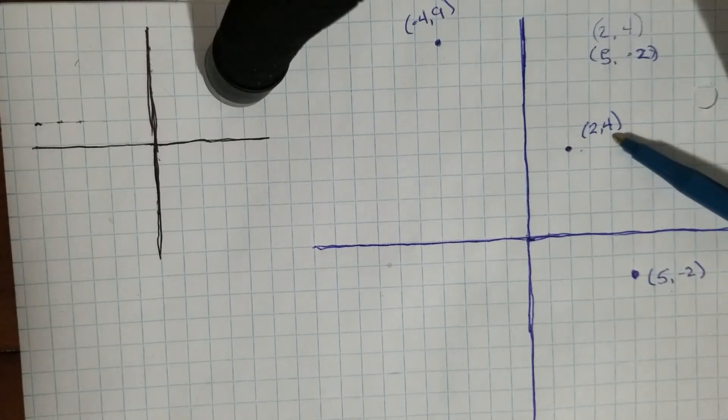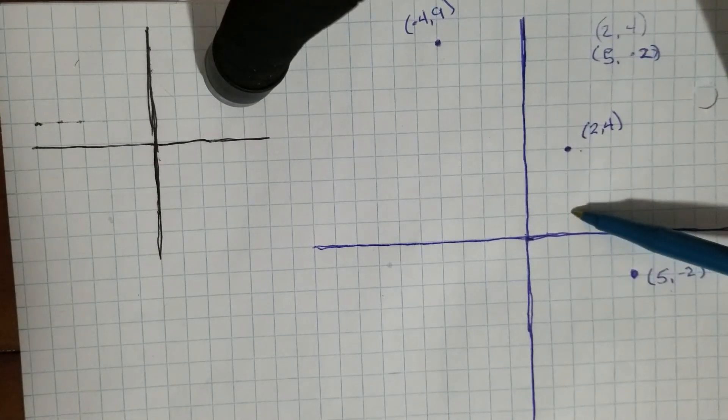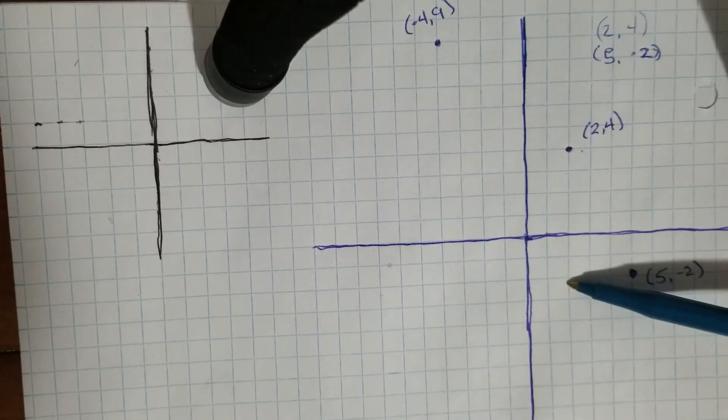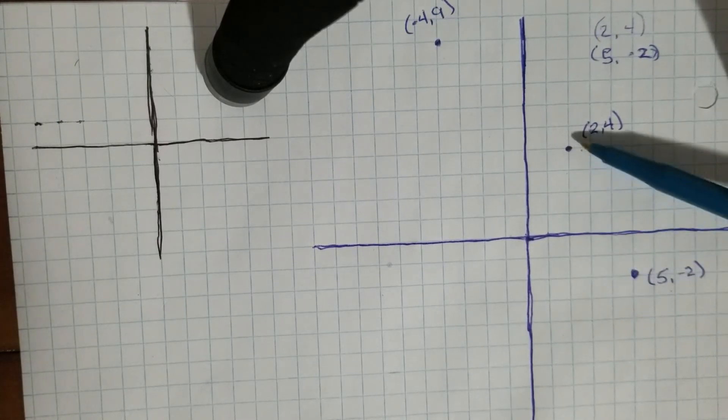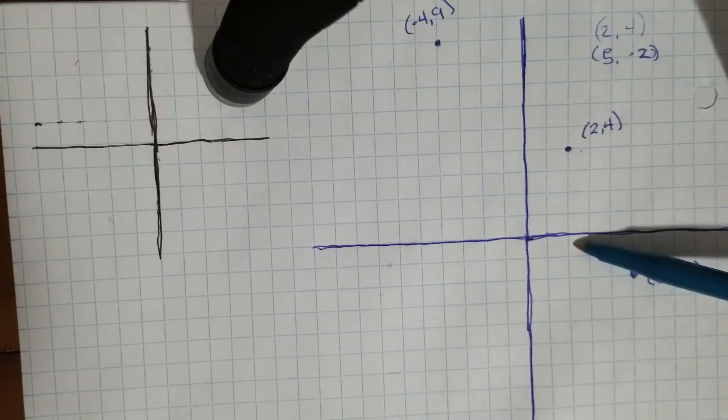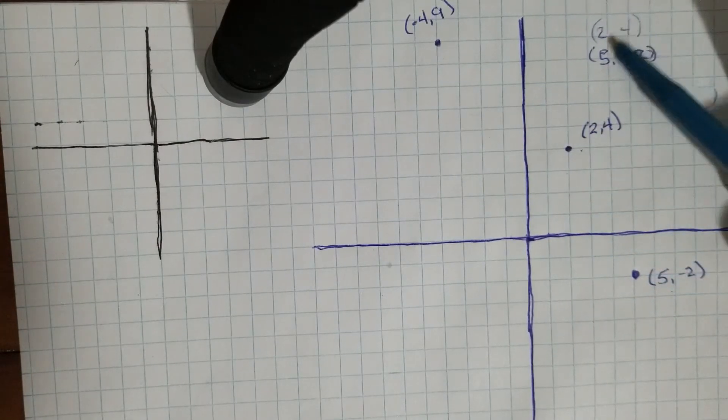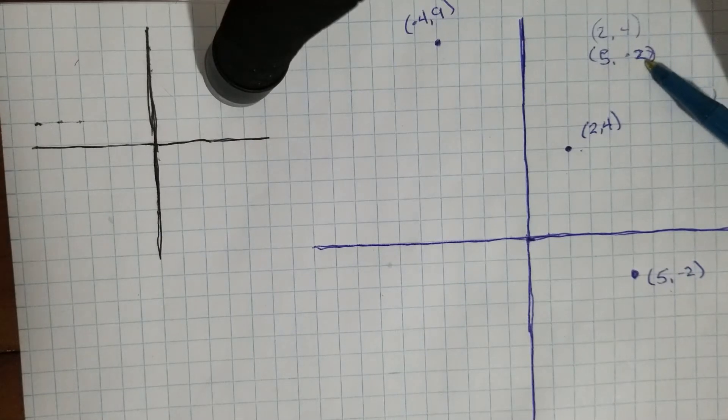For our Y, we're going from 4 to -2, so we're moving one, two, three, four, five, six spots in the Y direction. But remember that when we're moving down it counts as a negative. Up is positive, down is negative. We can also see that here: how do I get from 4 to -2? Well, I'm minus six.